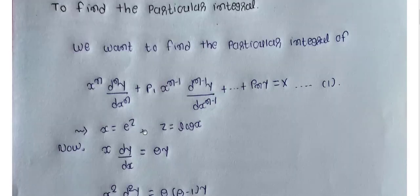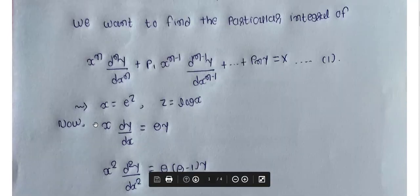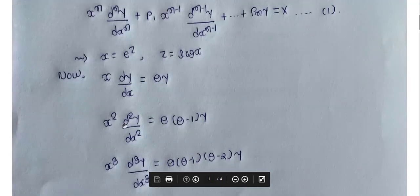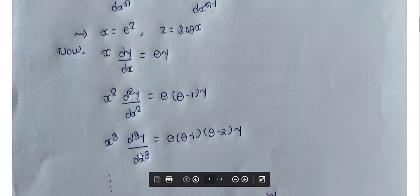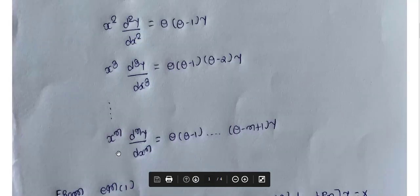So, x is equal to e raised to z and z is equal to log x. Then x dy/dx is θy, x squared d²y/dx² is θ(θ−1)y, x cubed d³y/dx³ is θ(θ−1)(θ−2)y, and in general x^n d^n y/dx^n is θ(θ−1)···(θ−n+1)y.